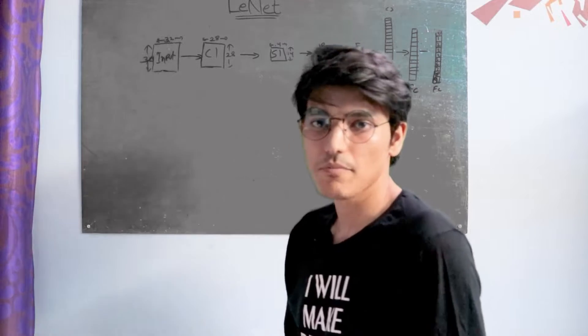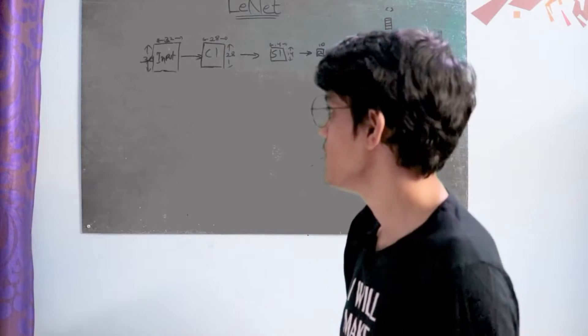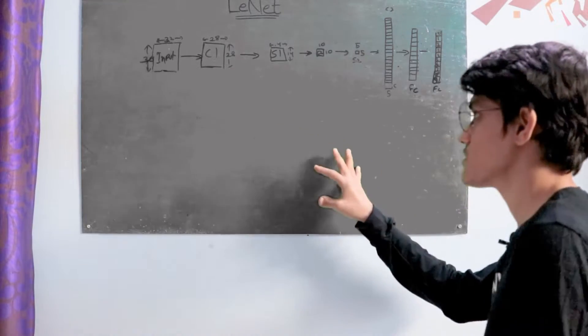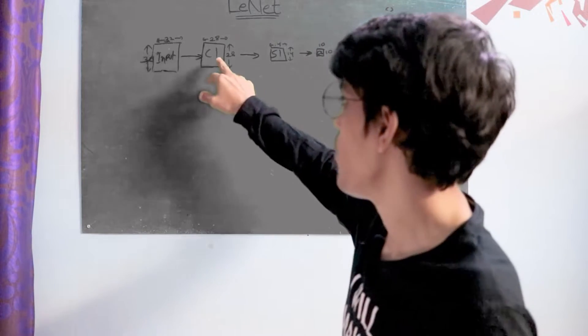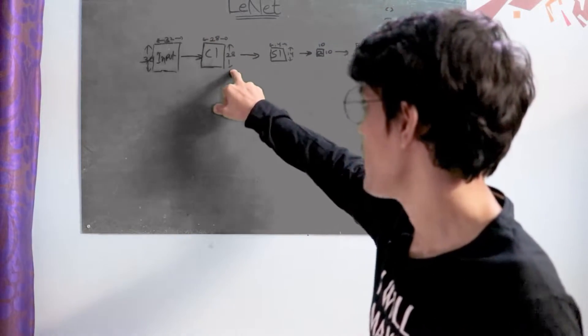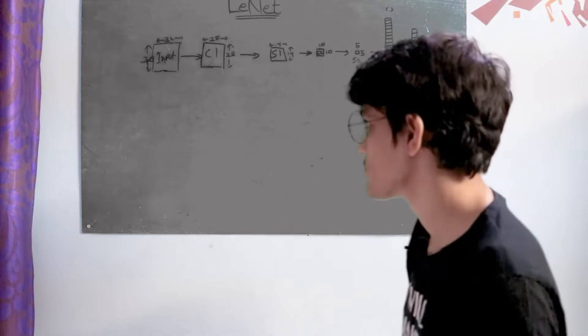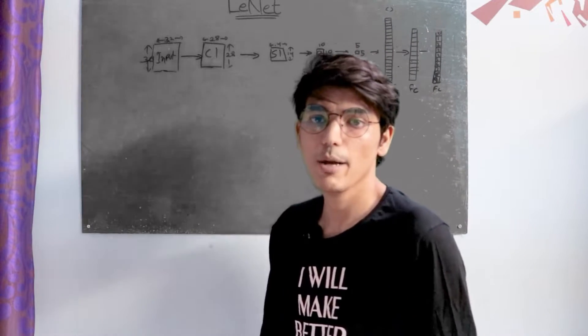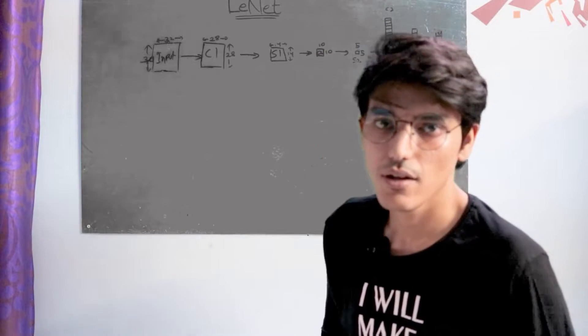Welcome to the first part. In this part we will see how all of the calculations are made and how we get a 28 x 28 matrix. First, we have an input of 32 x 32 image.